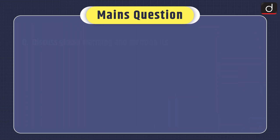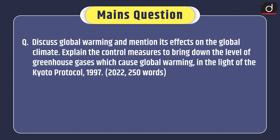A 2022 mains question: Discuss global warming and mention its effects on the global climate. Explain the control measures to bring down the level of greenhouse gases which cause global warming, in the light of the Kyoto Protocol 1997. That's all for today — stay tuned for the next episode, thanks for watching.